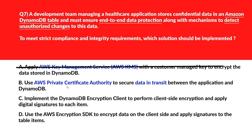Option B says: use AWS Private Certificate Authority to secure data in transit between the application and DynamoDB. Encryption in transit via Private Certificate Authority secures traffic but doesn't safeguard data stored in DynamoDB or verify unauthorized changes. It's incorrect. Option C says: implement a DynamoDB encryption client to perform client-side encryption and apply data signatures to each item. The DynamoDB encryption client supports client-side encryption and cryptographic signing, enabling end-to-end protection and tamper detection for table items. Let's keep this.